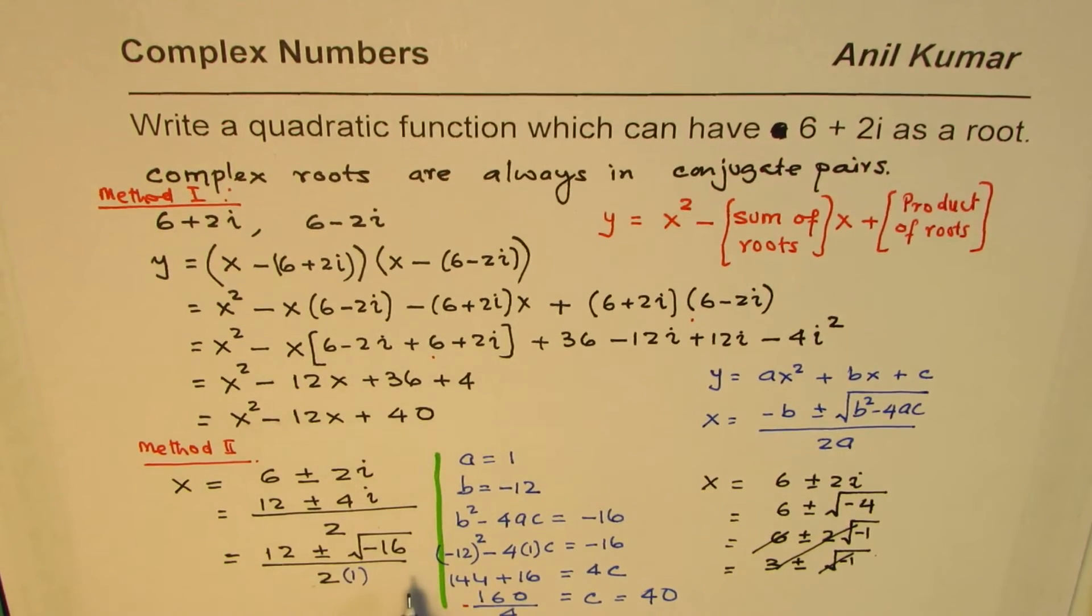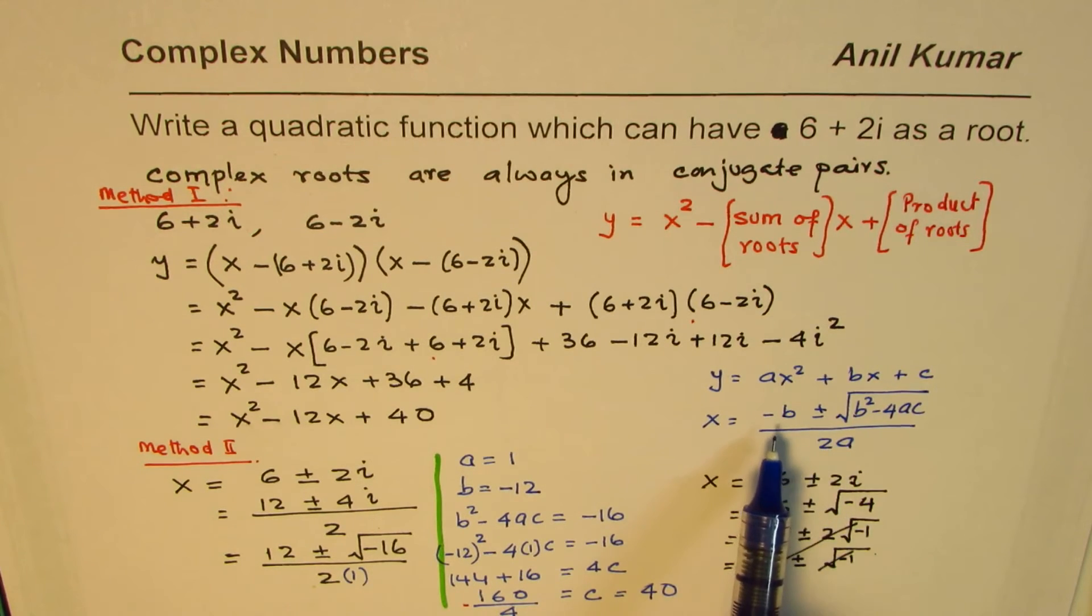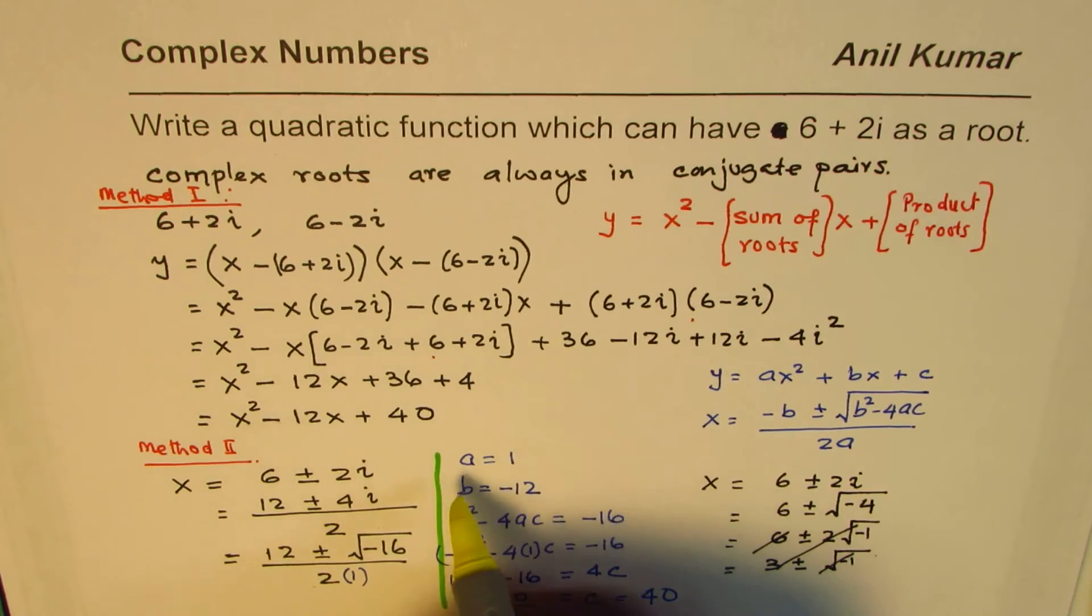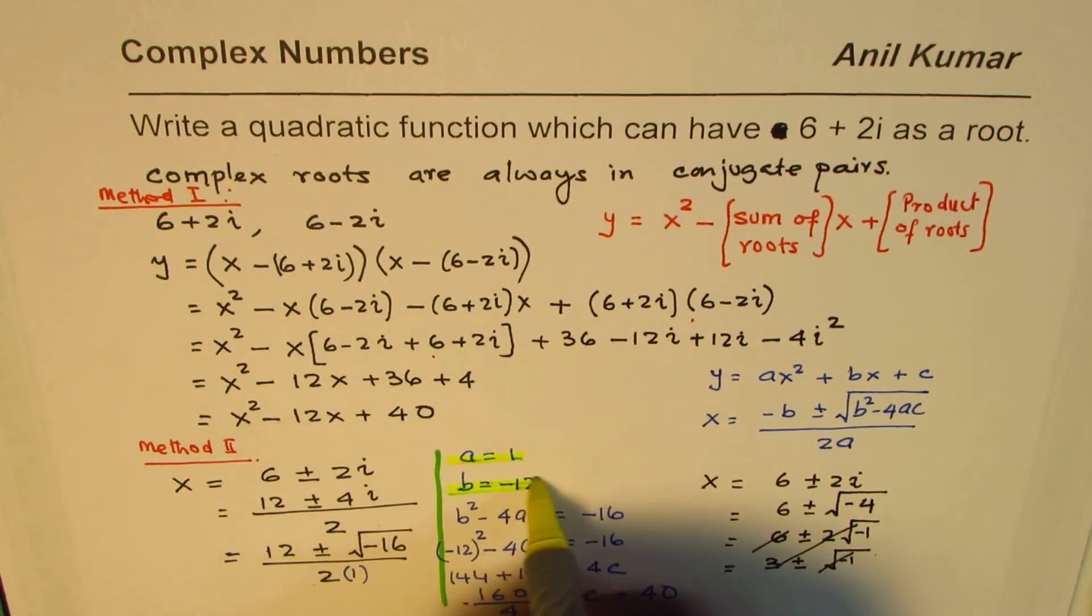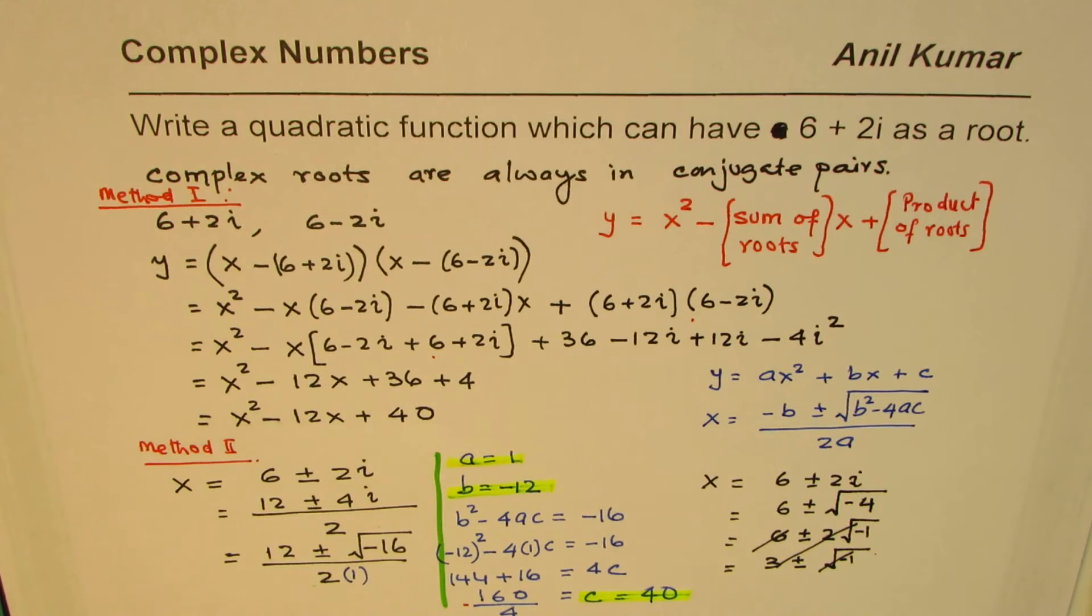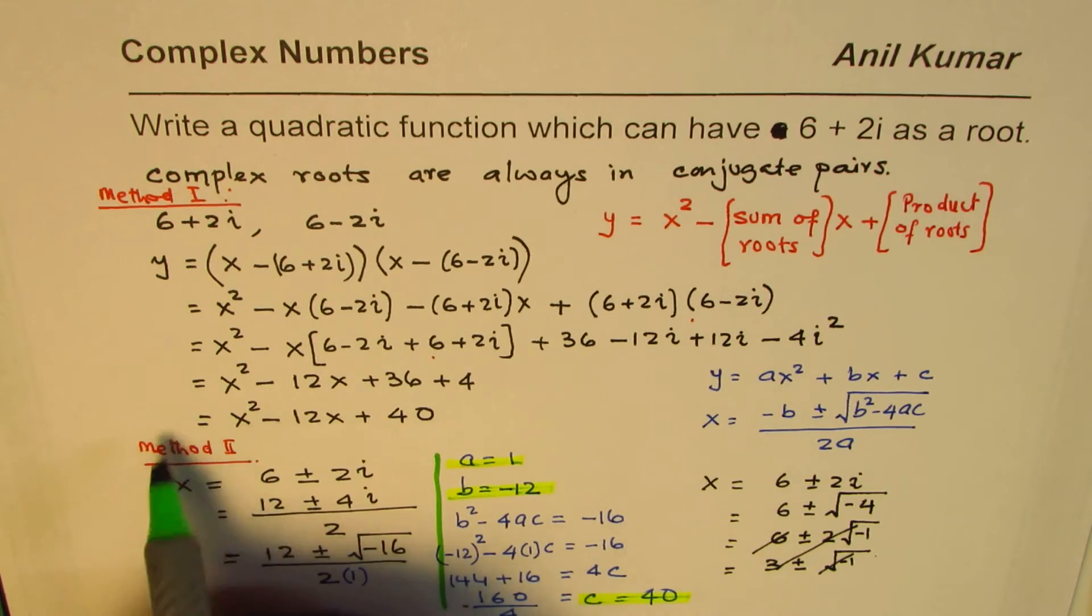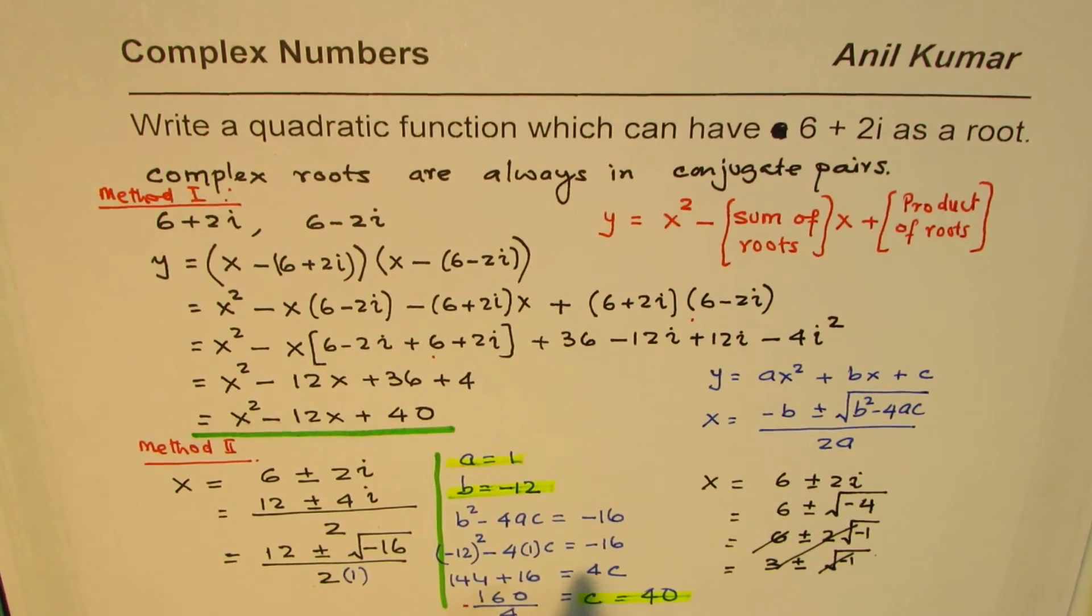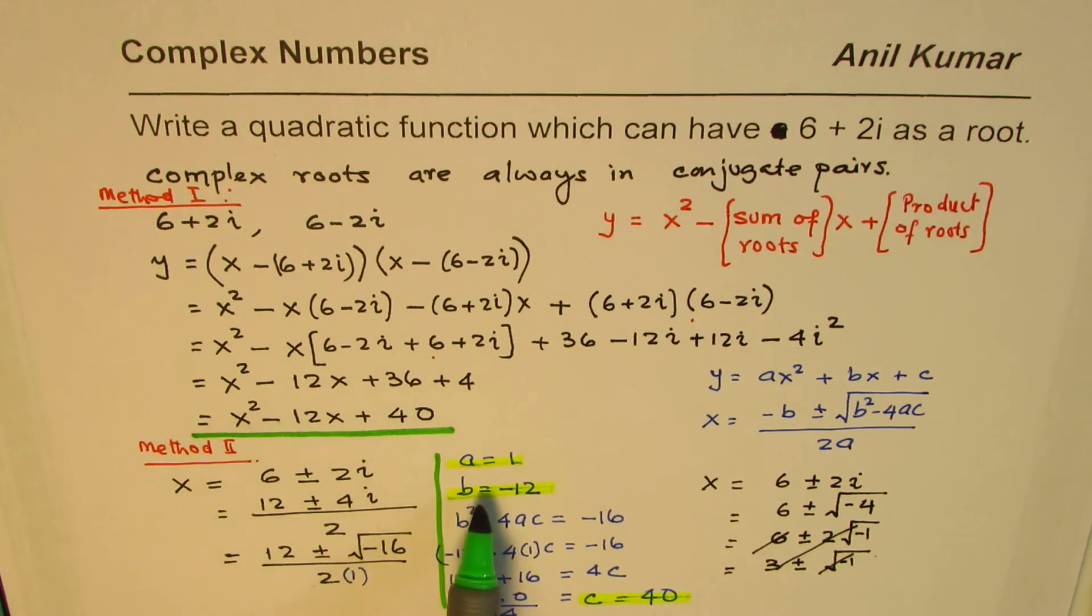So, what we have done here in method number 2 is written our root in the form of the quadratic formula. And then we have compared the coefficients. Comparing these coefficients, we got our values. We got a as 1, b as minus 12, and c as 40. And since these values are 1, do you see the equation? We can write down our answer, which will be exactly the same as we got earlier. A is 1, b is minus 12, and c is 40 for us.